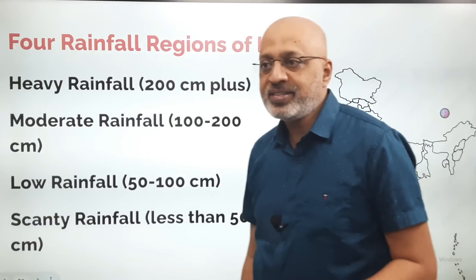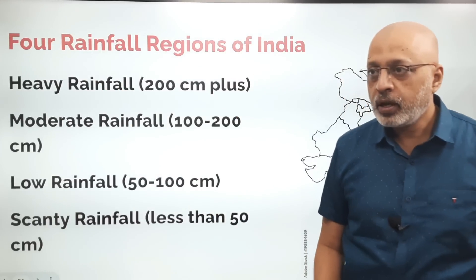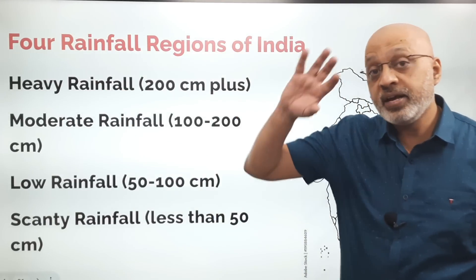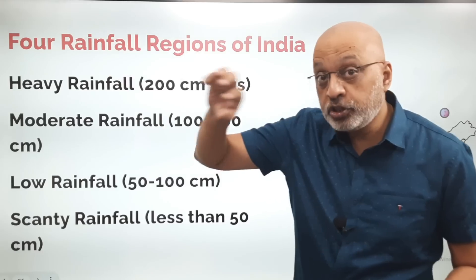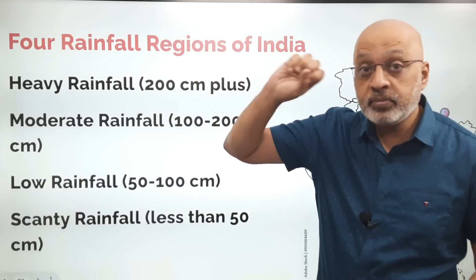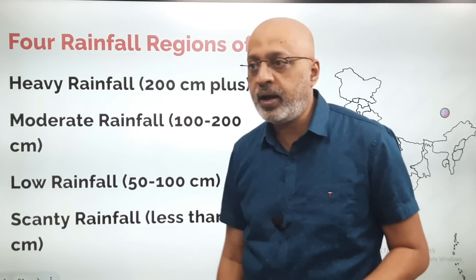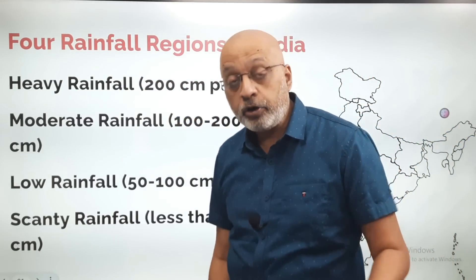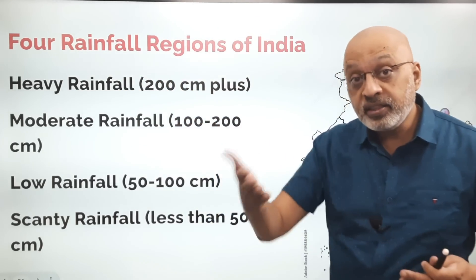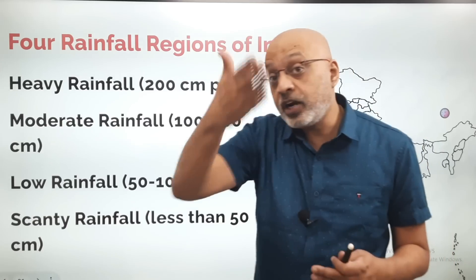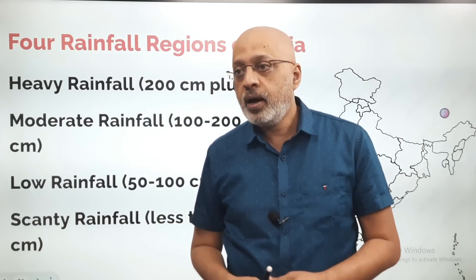In the heavy rainfall area you have areas in the northeast — Cherrapunji, Mawsynram, the Khasi Hills in Meghalaya, Arunachal Pradesh, Assam — and then the windward side of the Western Ghats, especially in Kerala.